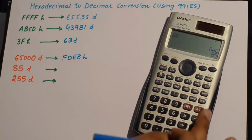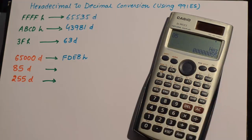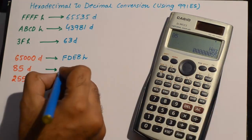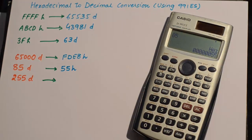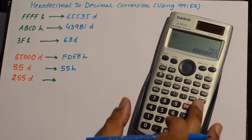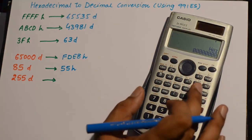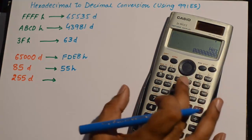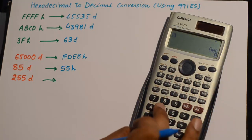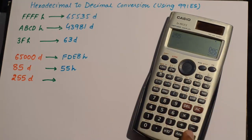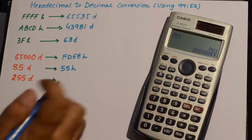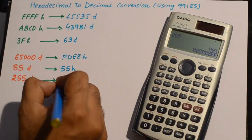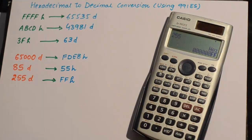The second number is 85 — click on hex and it is 55H in hexadecimal. I'll go back to decimal again, write 255, and its hexadecimal equivalent is FF, which is a very popular number.